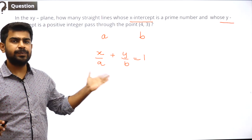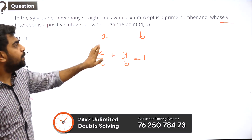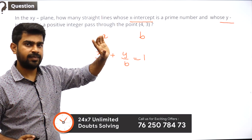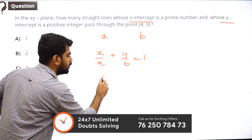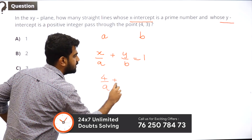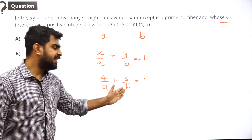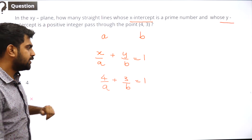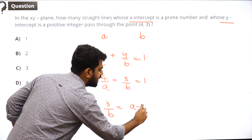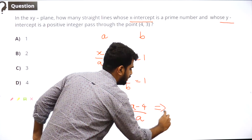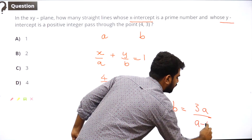Since the line passes through (4, 3), it must satisfy the equation. So 4/a + 3/b = 1. Getting b in terms of a: 3/b = (a − 4)/a, which implies b = 3a/(a − 4).